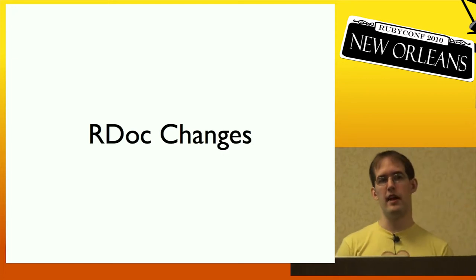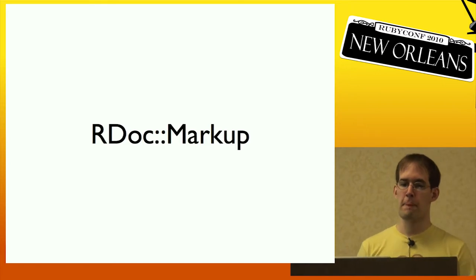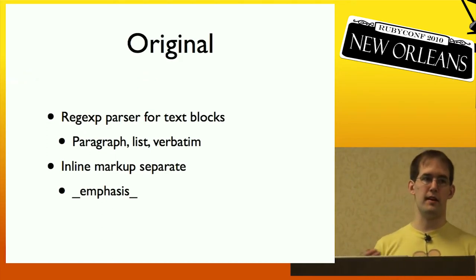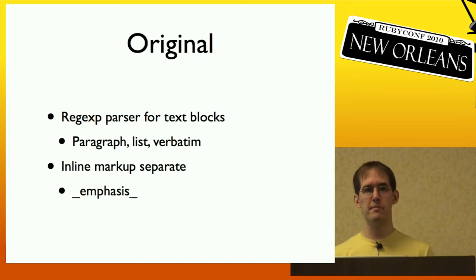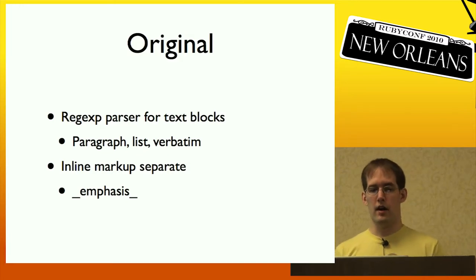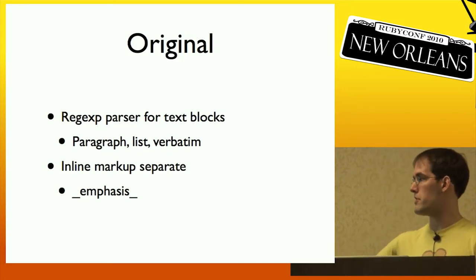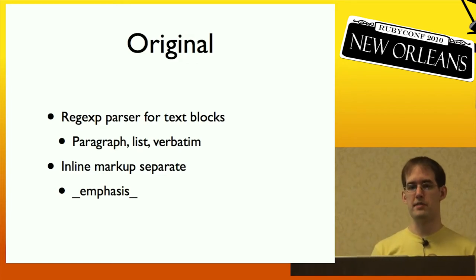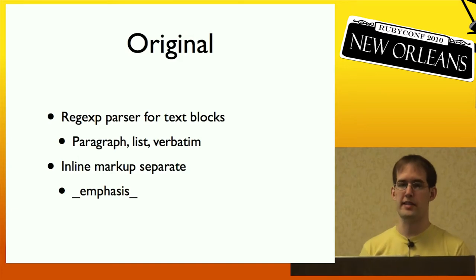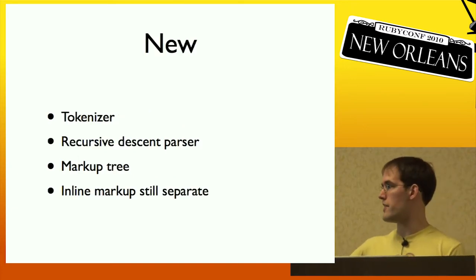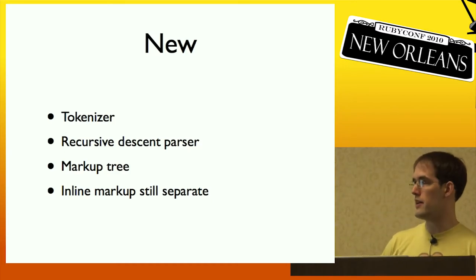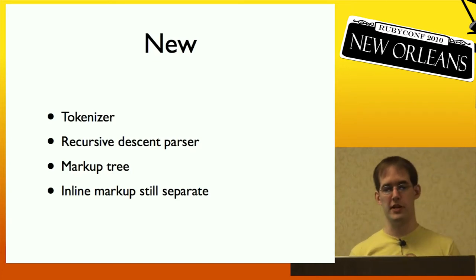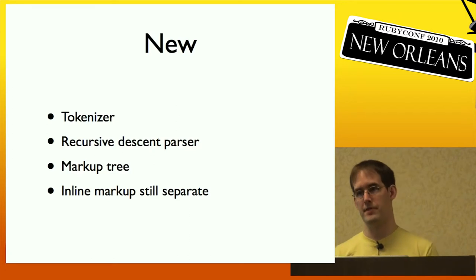In RDoc, I've replaced more code than in RubyGems, which is largely refactoring. First up is RDoc markup. The original RDoc markup used a regex parser for text blocks — paragraphs, lists, and random sections — with inline markup for things like emphasis or cross-references separate. The original parser used regular expressions to figure out things like indented blocks, and the state was kept separate from the regular expression, which was a bit hard to maintain. So I replaced this with a tokenizer and a cursor-based parser. It parses the input text and builds a markup tree, but inline markup is still separate. I battle-tested my new parser against all the gems using Gauntlet to make sure I didn't have any bugs I didn't know about from the tests.